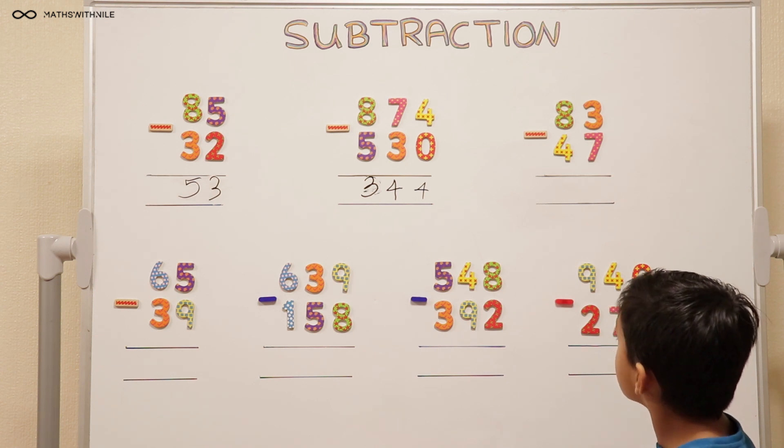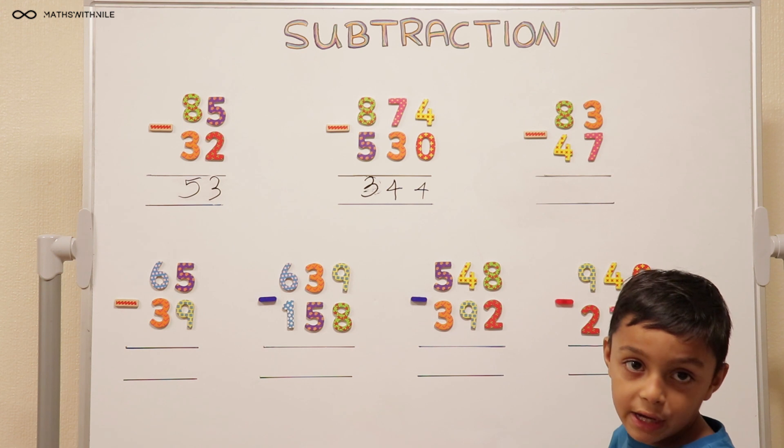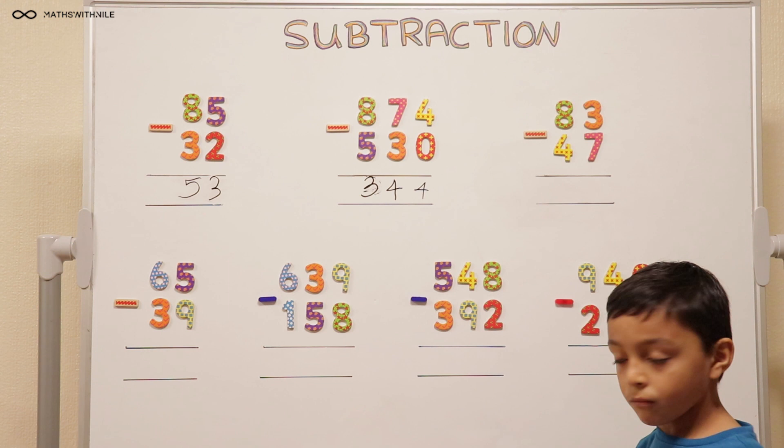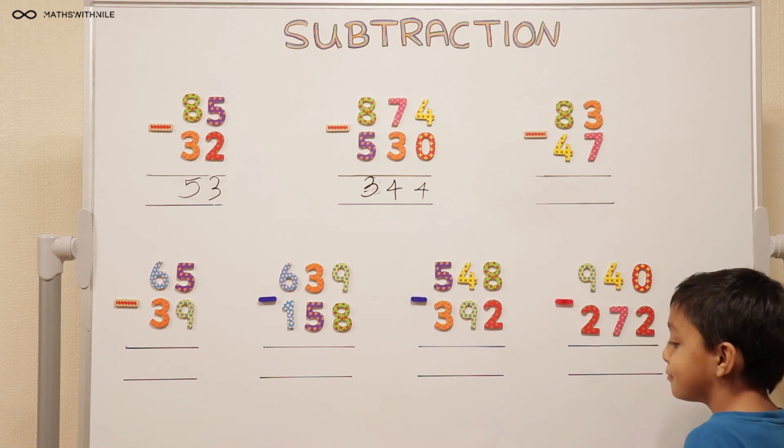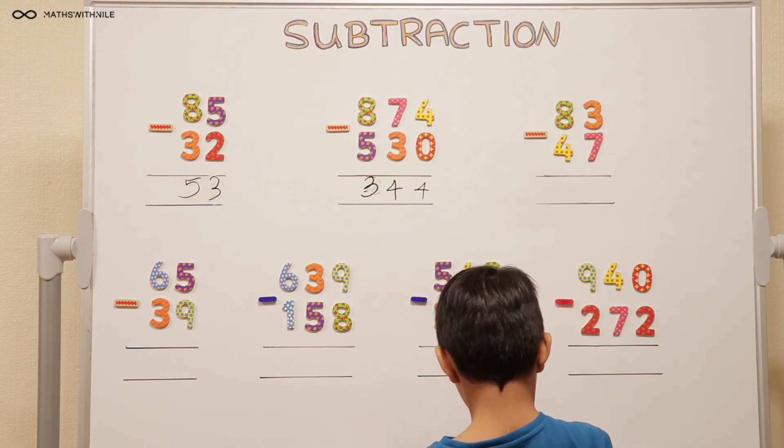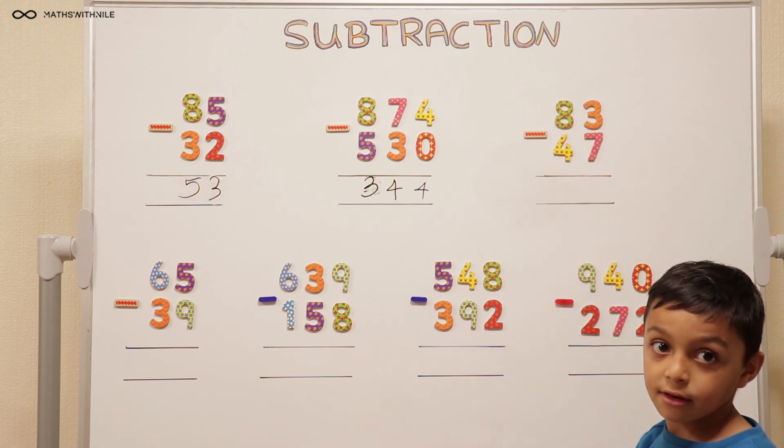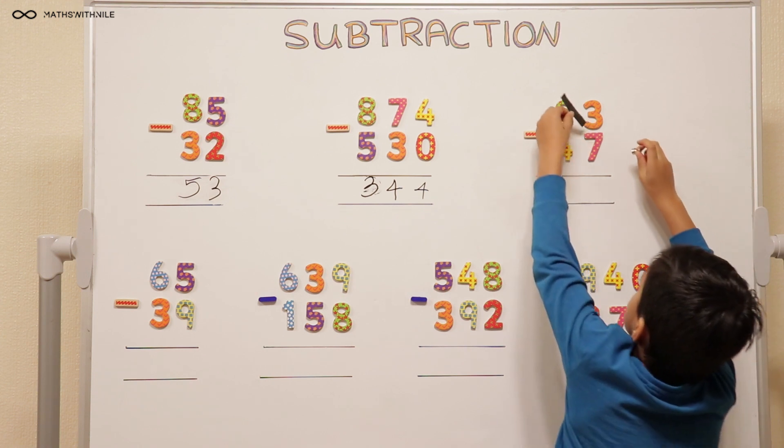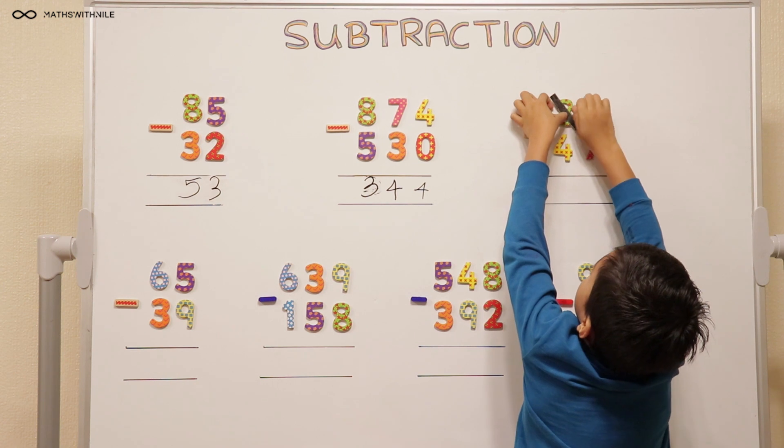Why doesn't it work? Because 7 is bigger than 3, so it can't go into 3. We can't take it away from 3 because it's bigger. We've got a problem but we know how to fix it. What are we going to do? We are going to get a magnet, get a strip, and we're going to cross out 8. When we cross out 8, why are we going to cross out the 8?